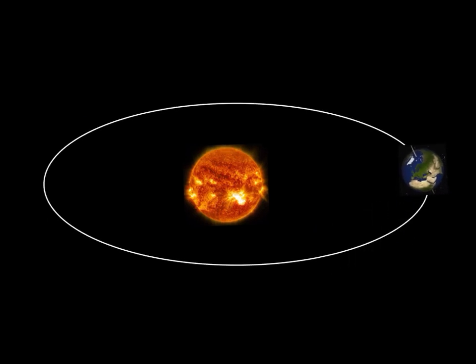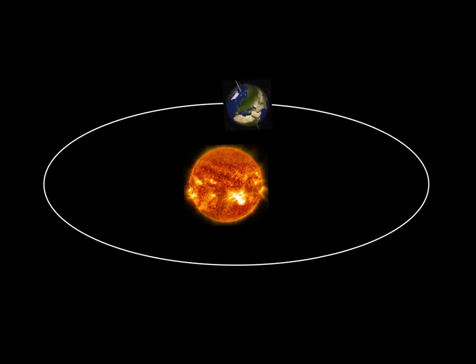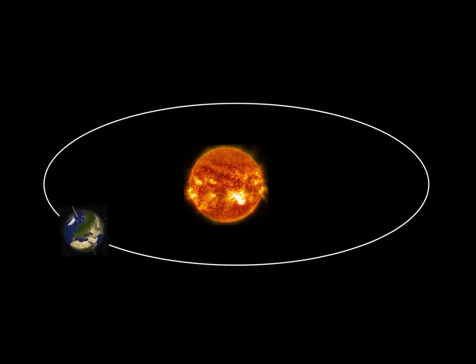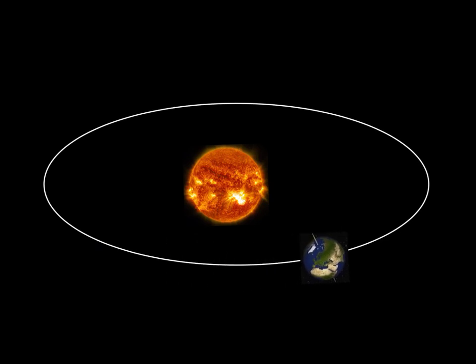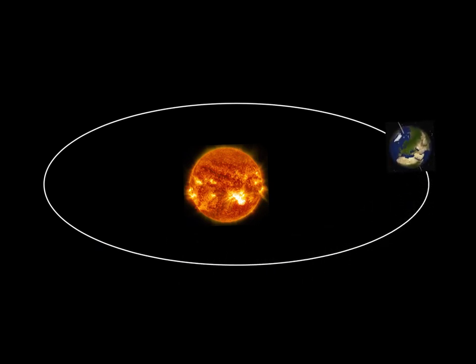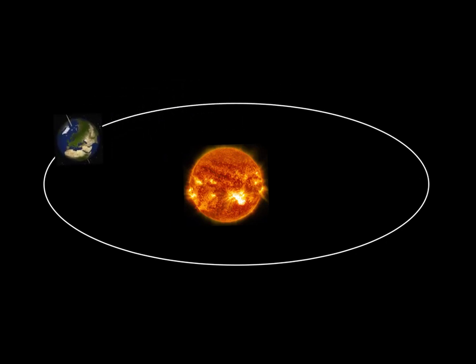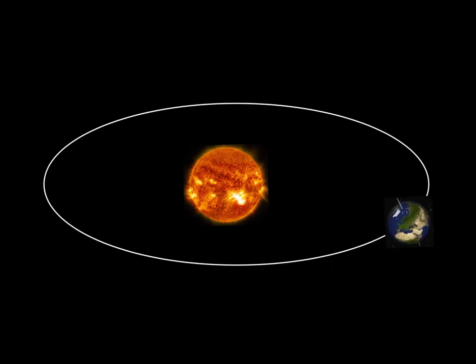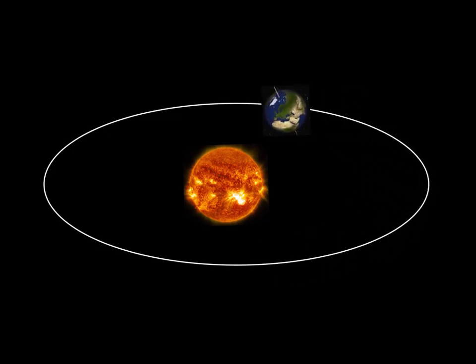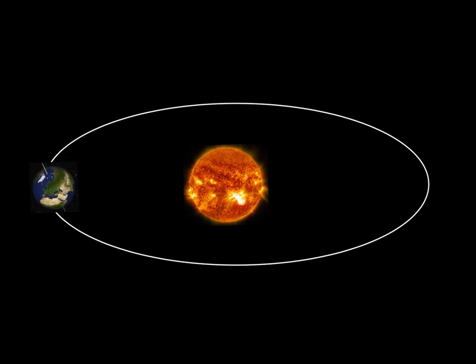As you can see, Earth is revolving around the Sun following its elliptical orbit — its oval path. Notice that as Earth revolves around the Sun and moves around it, the axial tilt does not change. When Earth is at its perihelion, closest to the Sun, notice the northern hemisphere's axial tilt is pointed away from the Sun.